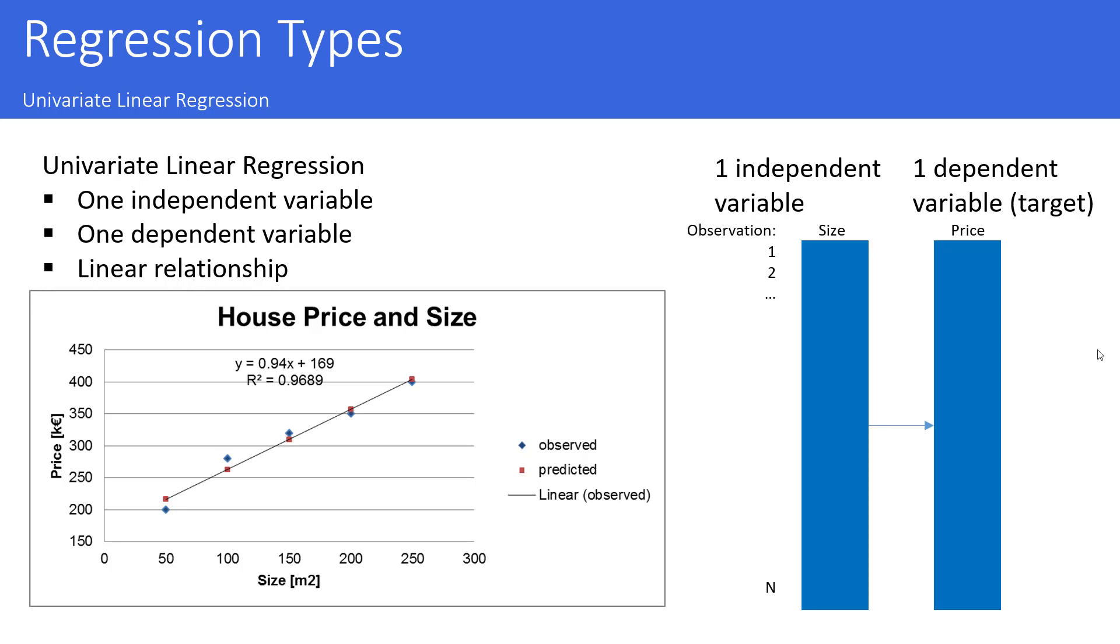At the right side, you can see there is one column with an independent variable, size, which is used to predict one dependent variable, the price. If the relationship between these data is linear, you can call it univariate linear regression.